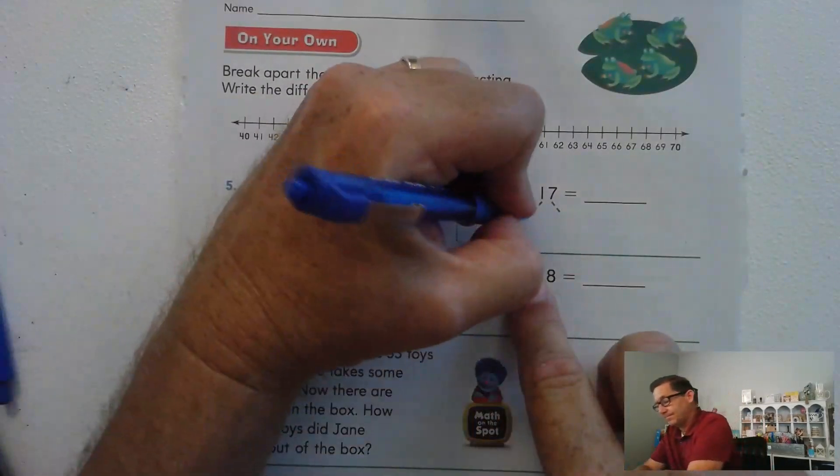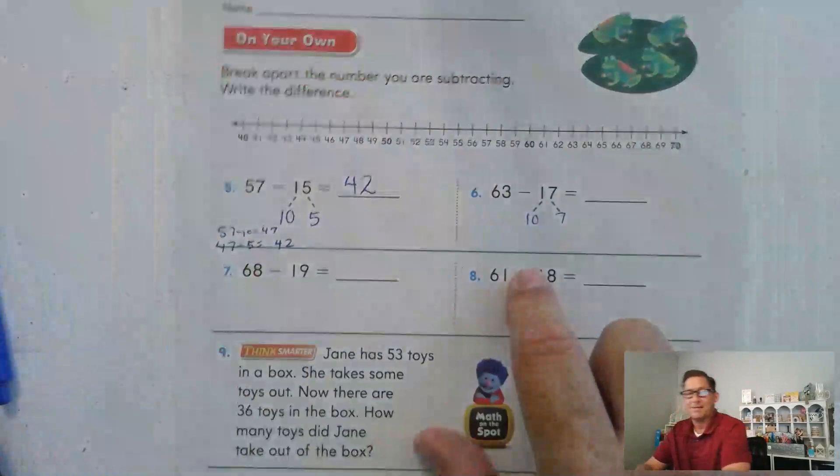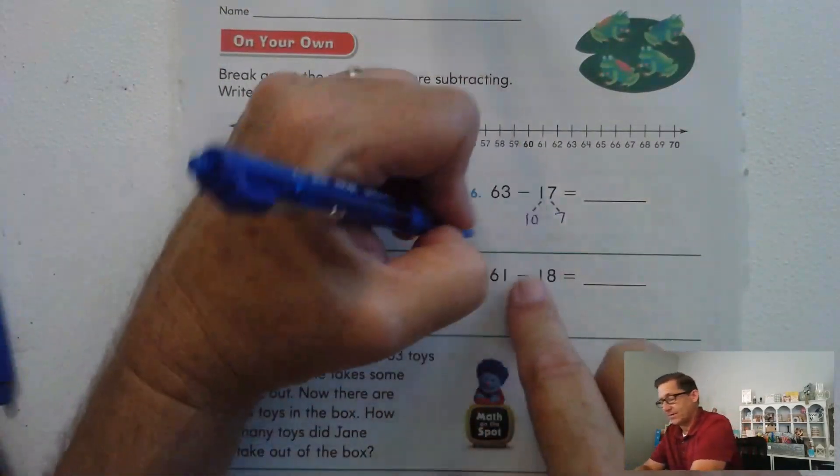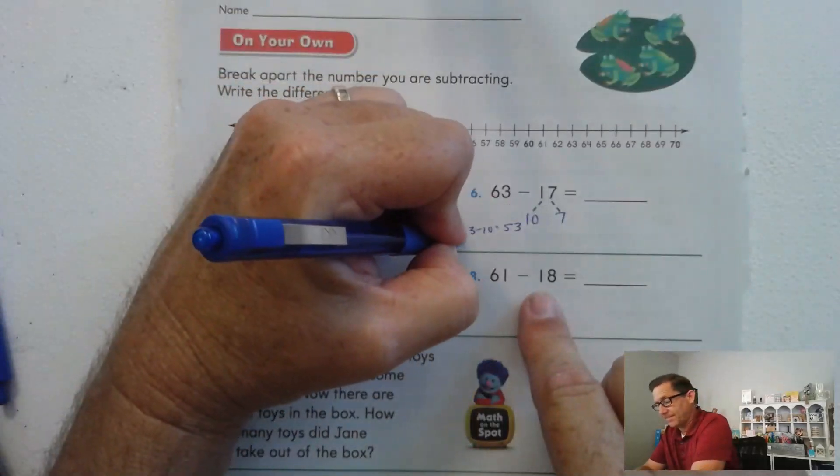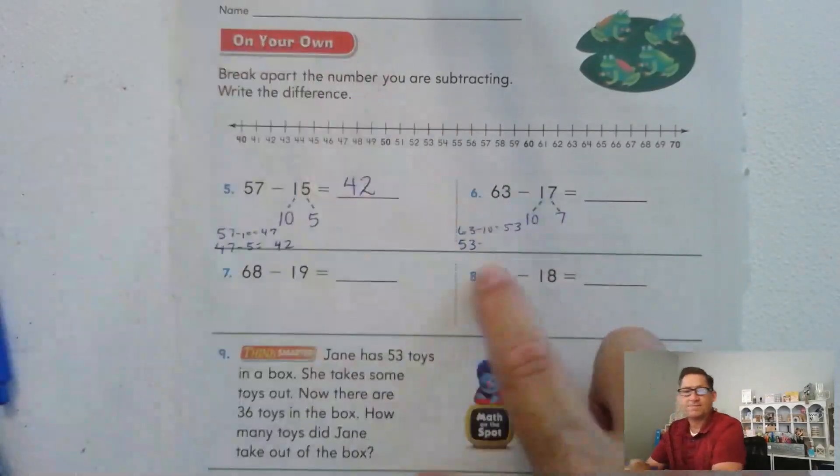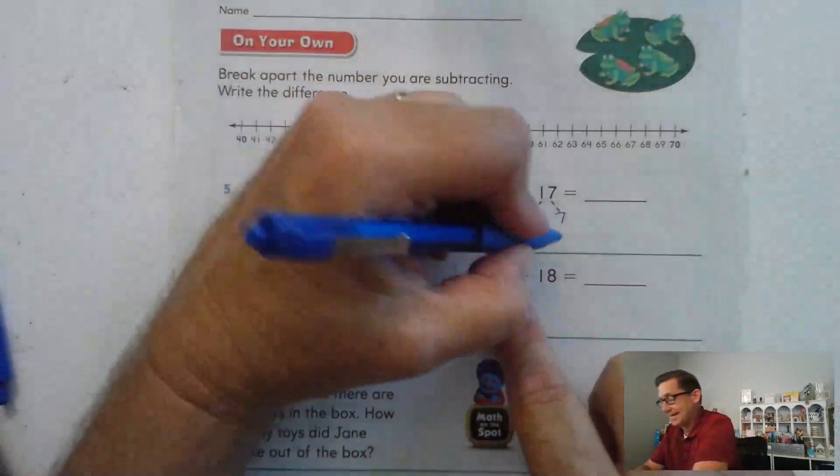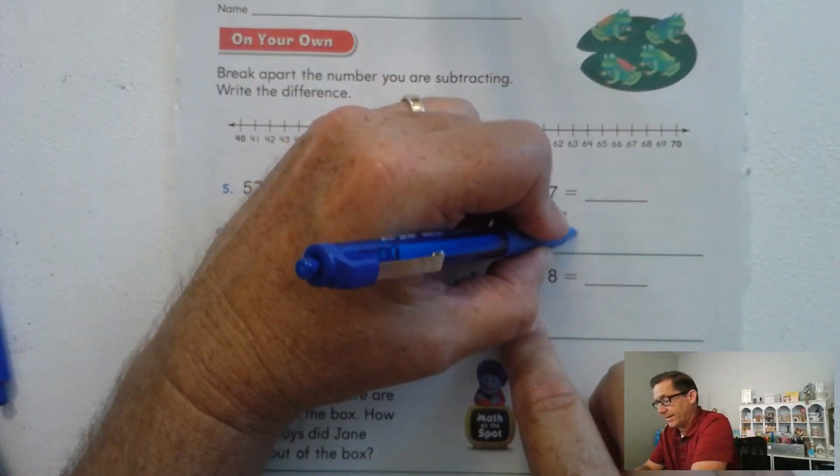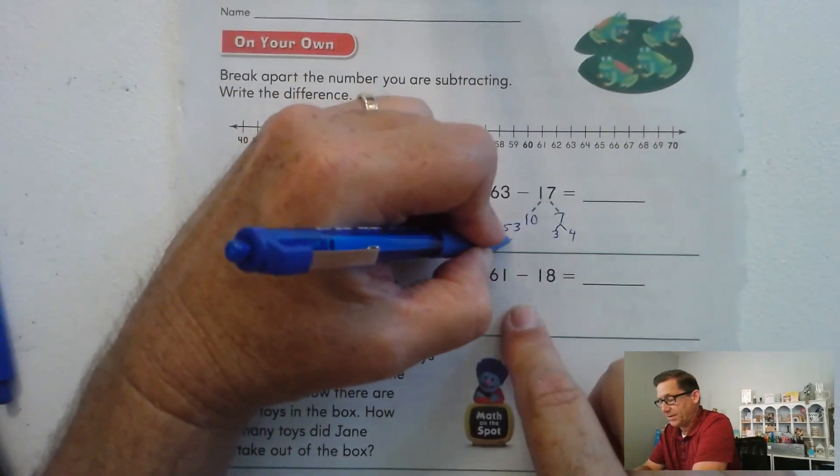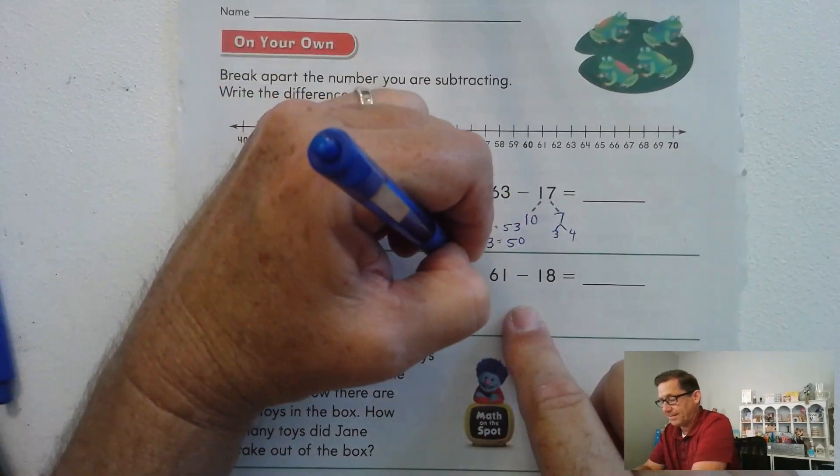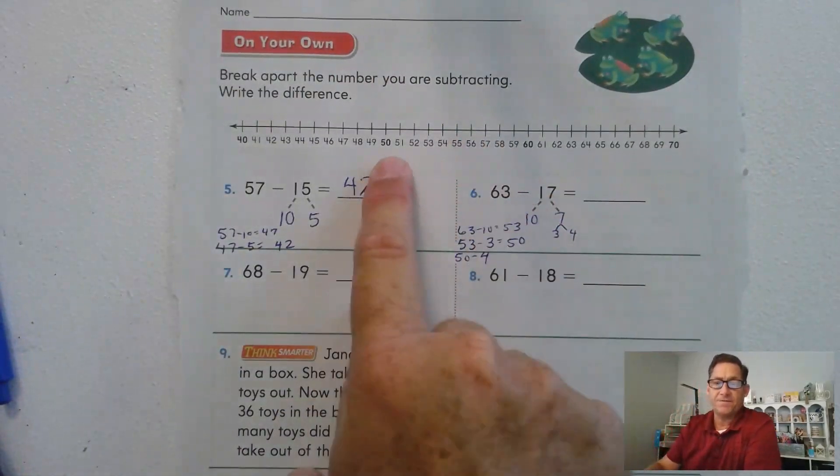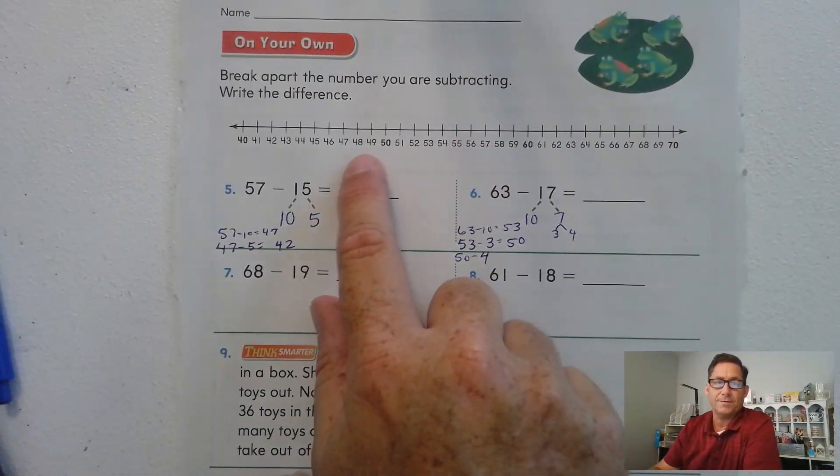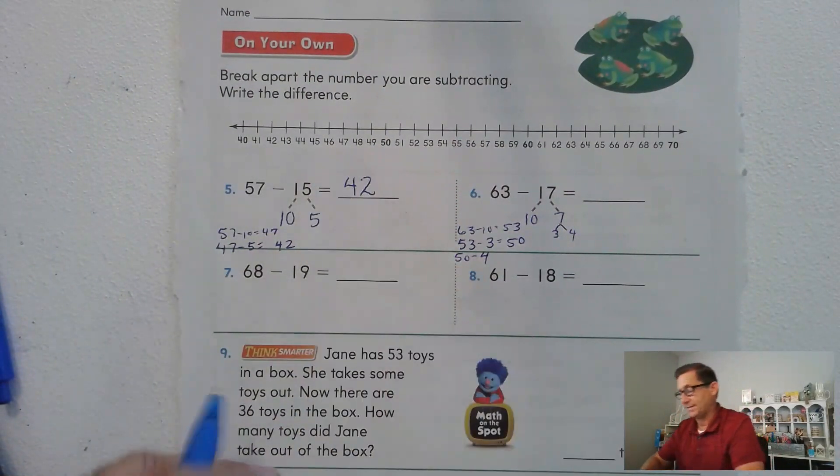63. Break the 17 into 10 and 7. 63 take away 10 is 53. Now what do we want to subtract from 53 to make it into a 10? 3. 53 minus 3 is 50. And 50 minus 4. If we need to, we can go to 50 on the number line and back up 4: 1, 2, 3, 4. 46.